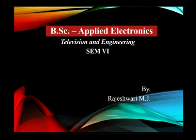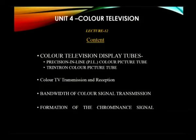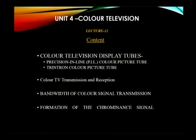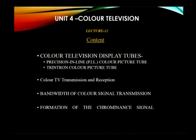Welcome to the UGC Lecture Series of B.E. Applied Electronics. Today we are dealing with the subject Television Engineering, and we are going to discuss topics in Unit 4: Color TV. The contents include Color Television Display Tubes — previously we discussed the Delta In-gun Color Picture Tube. The two remaining types are the Precision Inline Color Picture Tube and the Trinitron Color Picture Tube. We will also cover Color TV transmission and reception, bandwidth of color signal transmission, and the formation of the chrominance signal.